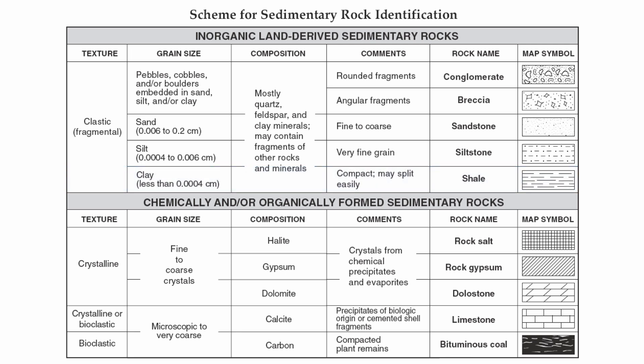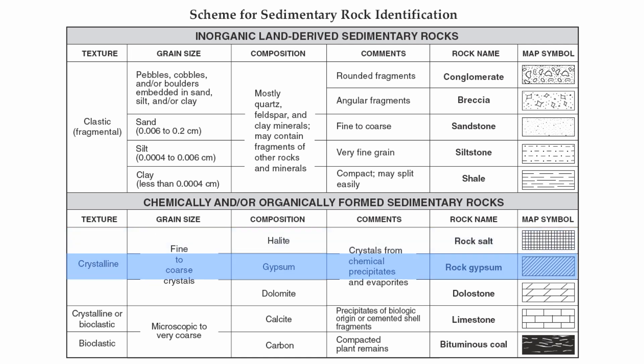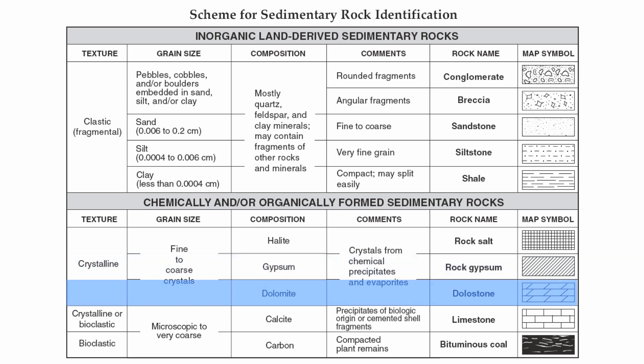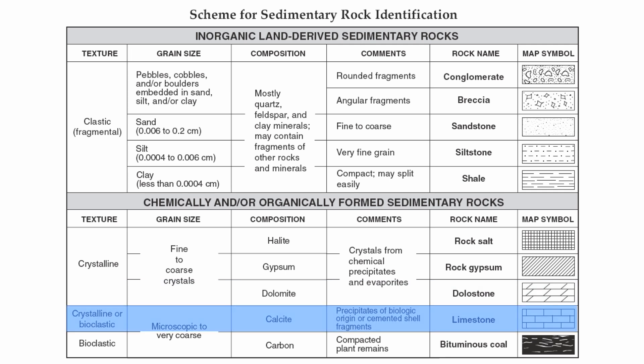Below that you get your crystalline rocks, and these rocks are what we call monomineralic, meaning their composition is made up of only one mineral. So you get rock salt, rock gypsum — which is made up of gypsum — dolostone made up of dolomite, and finally limestone, which is made up of calcite. Those are all monomineralic rocks. In the comments, you'll notice they're made up of crystals from chemical precipitates and evaporites — formed through the precipitation or evaporation of water.